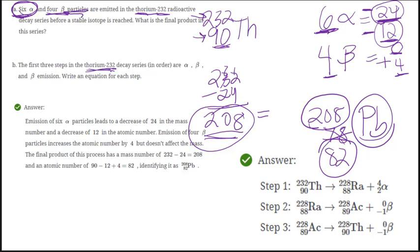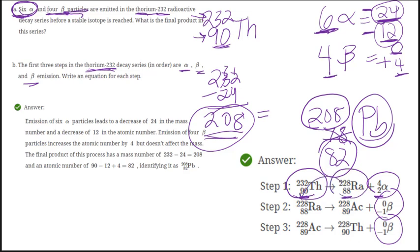The first three steps of thorium-232 decay are alpha, then beta, then beta. Starting with thorium-90, an alpha decay loses 2 protons and 4 mass units — that would be Ra-88 (radium), mass 228. That becomes our starting point for step 2. Beta means we increase our atomic number by 1 but the mass stays the same. Then that becomes the beginning of step 3 — increase the atomic number one more time and the mass stays the same.